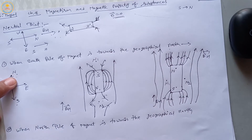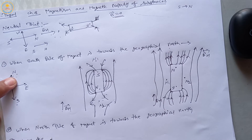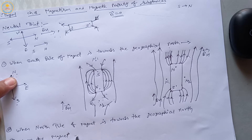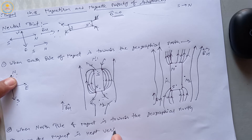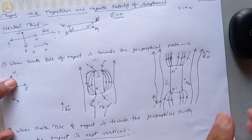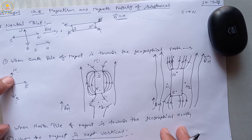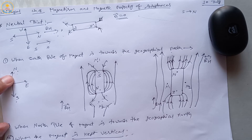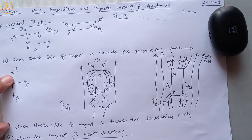The third condition is when the magnet is kept vertical. In this condition we have two sub-cases: first, if the north pole lies on the lower side, and second, if the south pole lies on the lower side.